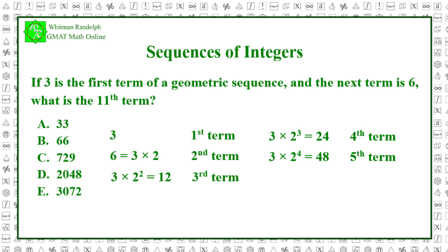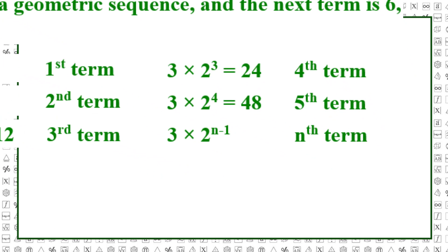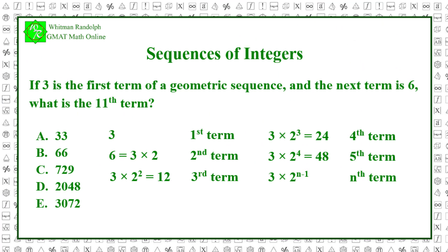By now you should see a pattern that the nth term is 3 times 2 to the n minus 1. And therefore, the 11th term will be 3 times 2 to the 10th power, which equals 3 times 1024, and that equals 3072. That's the 11th term.